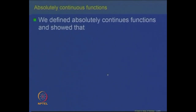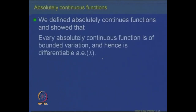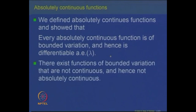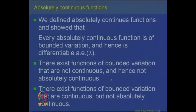If you recall, we had defined in the previous lecture what are called absolutely continuous functions, and showed that every absolutely continuous function is a function of bounded variation. Hence it is a difference of two monotone functions and as a consequence becomes differentiable almost everywhere. There exist functions of bounded variation that are not continuous and hence not absolutely continuous, and also functions that are continuous but not absolutely continuous.